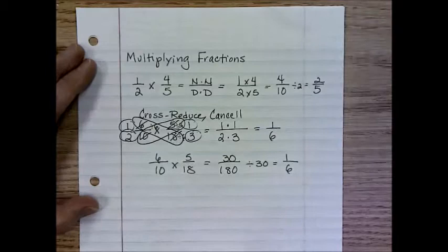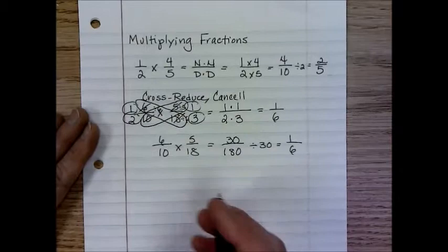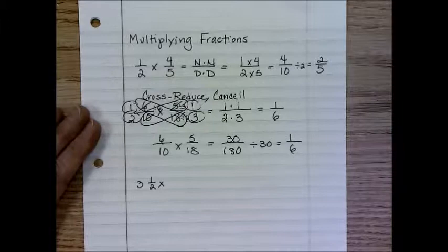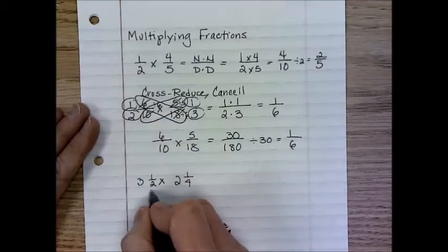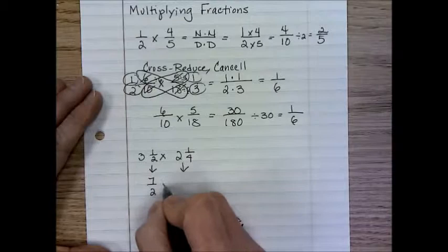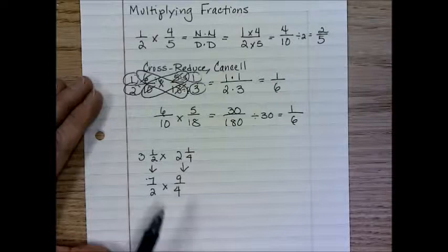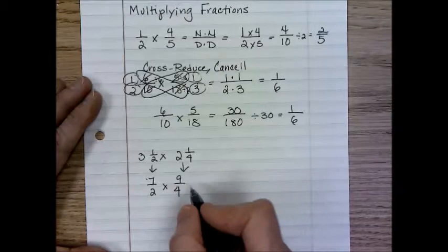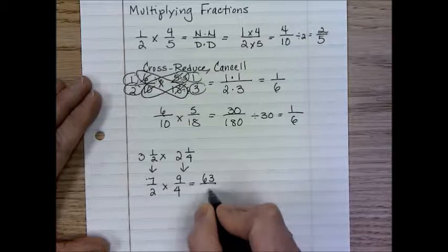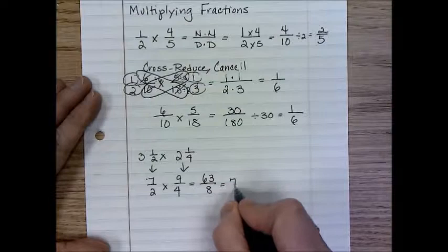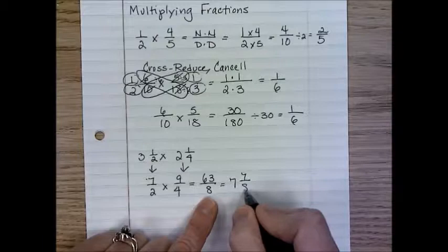Now, if we have some mixed numbers, for instance, three-and-a-half times two-and-a-fourth, first we have to change our numbers to improper fractions. You cannot multiply mixed numbers. So here we would have seven-halves times nine-fourths. Can I cross-reduce anything? No. Seven and four do not have a common factor. Nine and two do not have a common factor. Now, seven times nine would be sixty-three. Two times four would be eight. And sixty-three divided by eight would be seven. And seven times eight would be fifty-six. So we have a remainder of seven. That would be seven and seven-eighths.